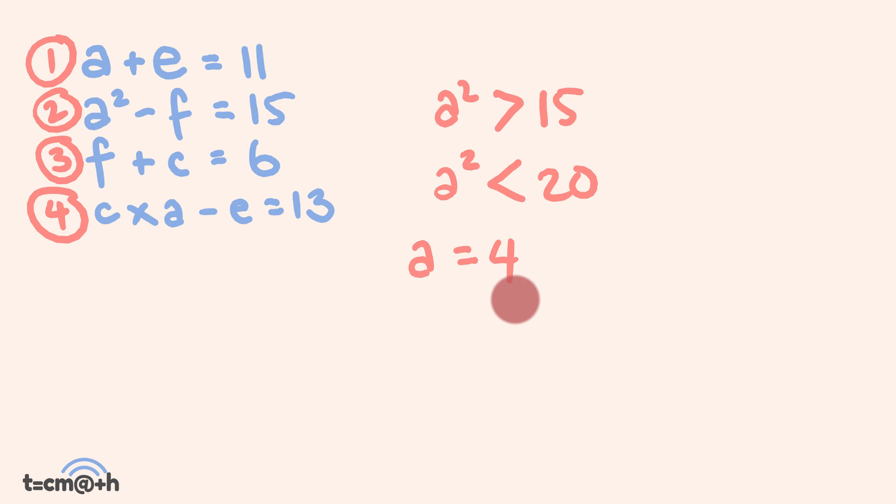a² would have to equal 16, the only squared number between these two values. From here we can solve pretty simply by substituting in our values. If a² = 16, subtract what number equals 15? Therefore f = 1. a + e = 11, so if a = 4, then e = 7. Going back to equation 3, f + c = 6. We know f = 1, so c = 5.